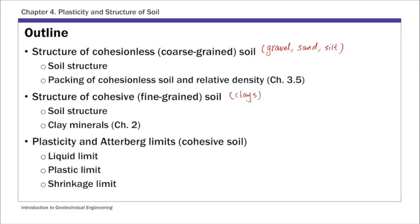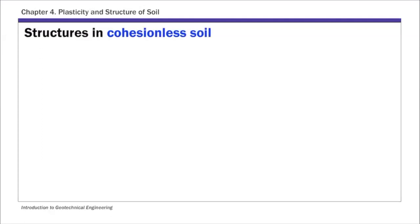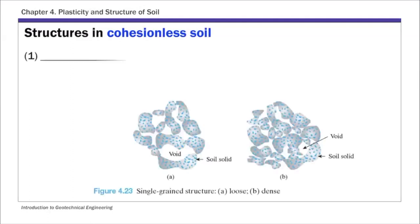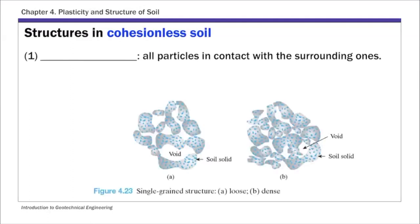In the next lecture we're going to look at plasticity and Atterberg limits, which are used to classify soil for engineering purposes. For cohesionless soil — that's gravel, sand, and silts — there are two common types of structures. The first type is called single grain structure. Pictures of single grain structure are shown on the slide.